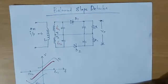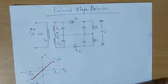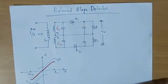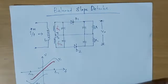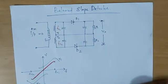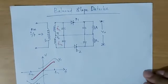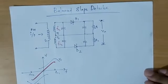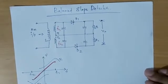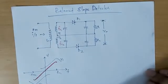In this lecture we are going to learn about the balanced slope detector. In the last session we discussed about the slope detector and its drawbacks. The balanced slope detector overcomes the drawbacks of the slope detector. A balanced slope detector circuit combines two slope detector circuits in a balanced configuration.